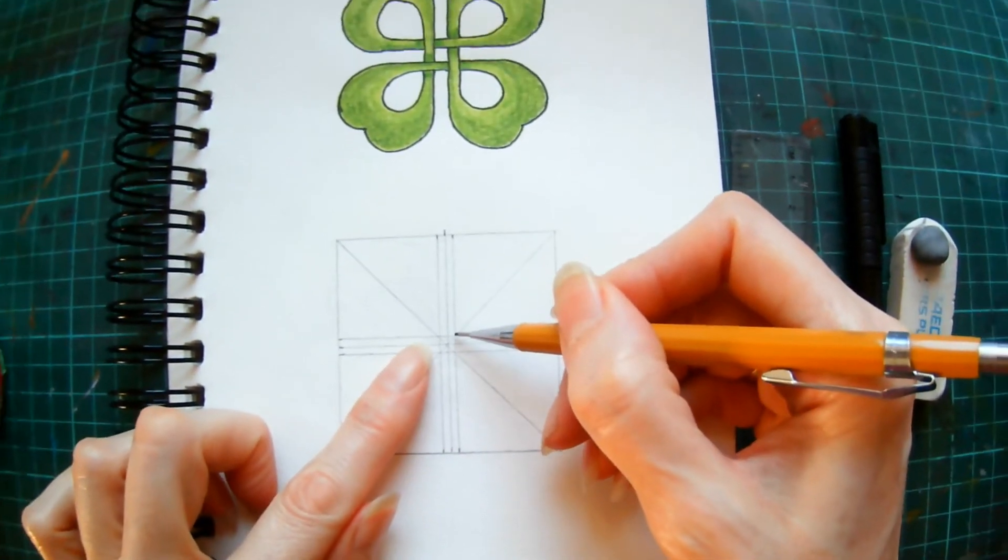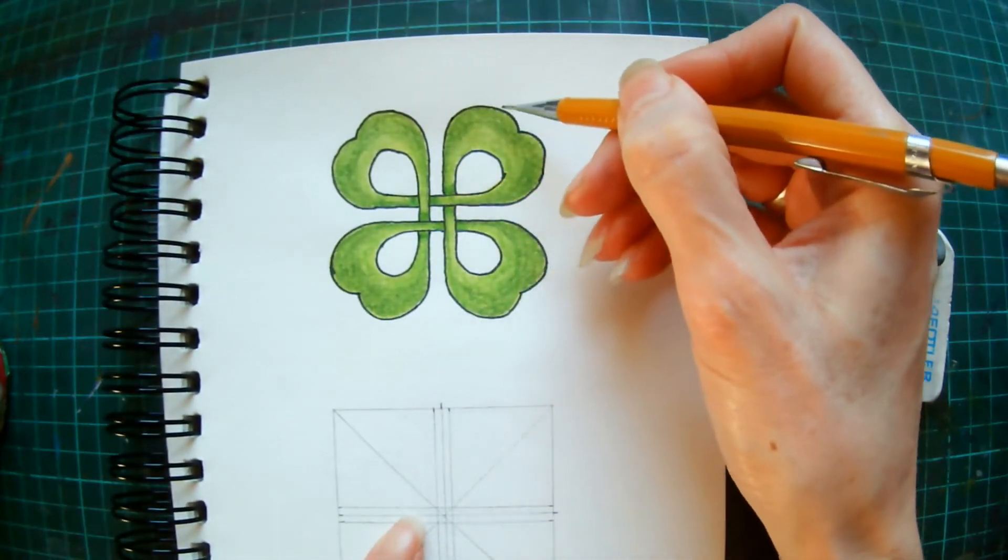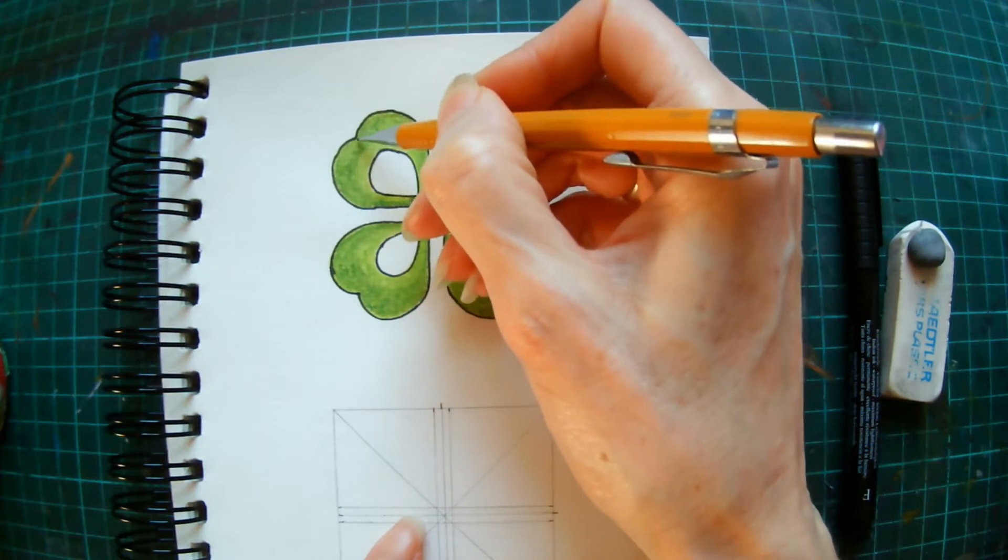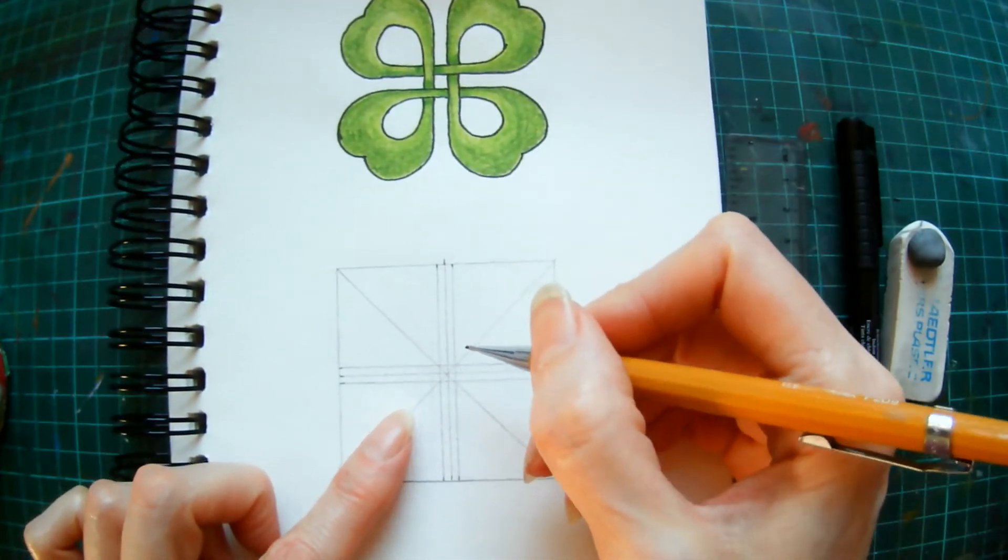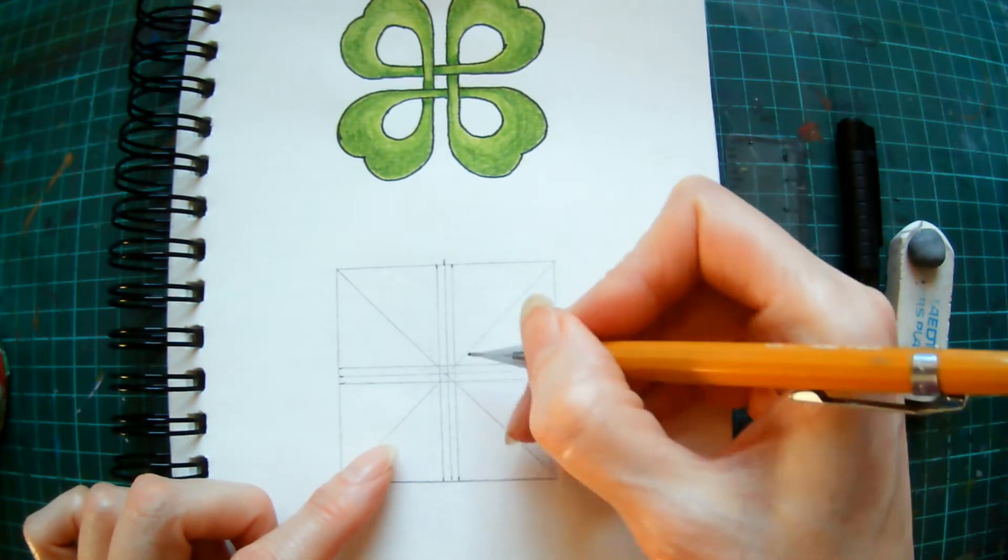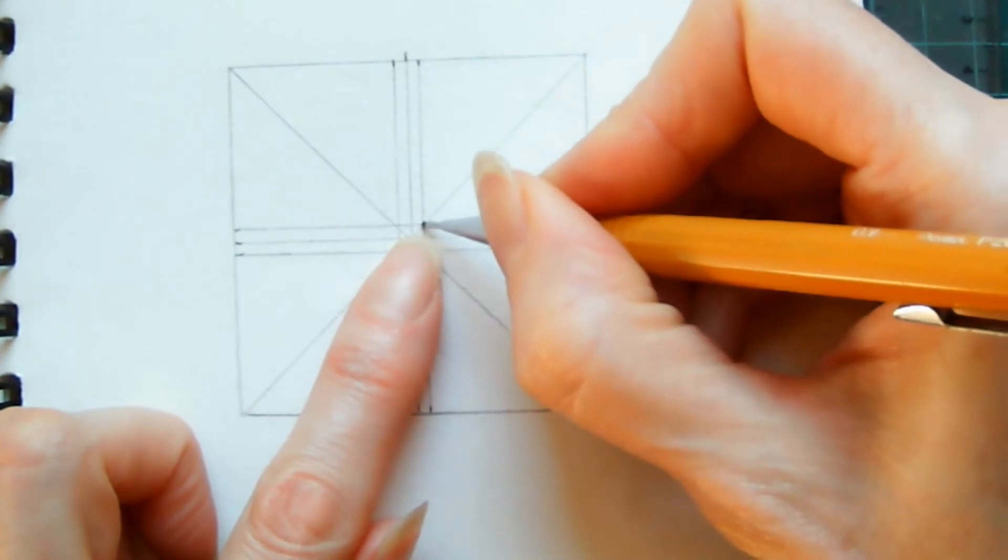So we're going to draw the outer line of the clover, so that's this line here. And we're going to draw that using the guidelines. We start from this top right hand square in the center here, and drawing along the guideline, going to draw a straight line up to about two thirds of the way up, maybe a little bit over.